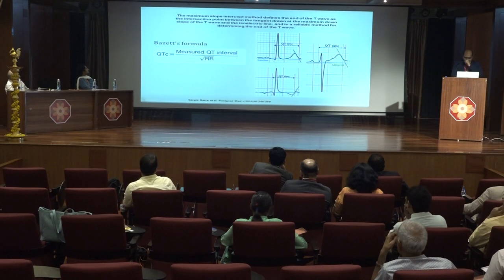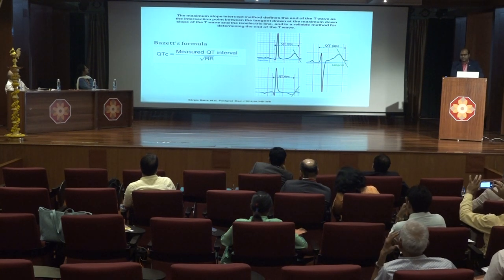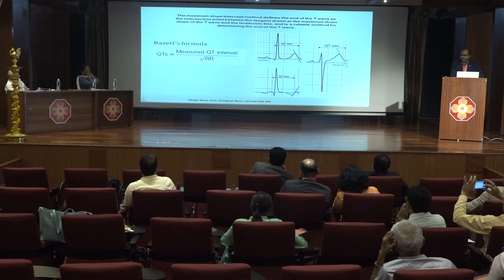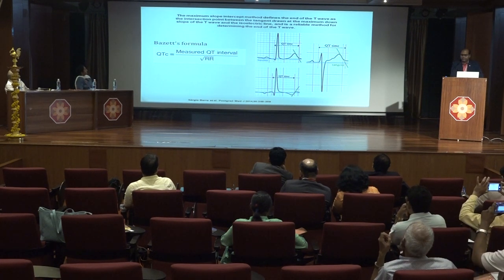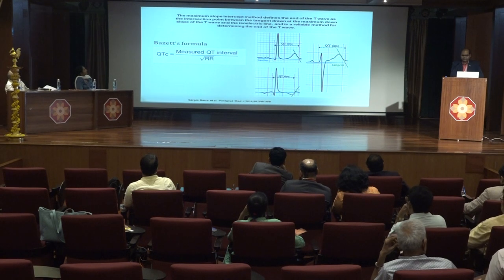It is important to measure the QT interval manually and not rely on computer-derived values. To measure the QT interval, draw a perpendicular line to the start of the Q wave. To find the end of the T wave, draw a tangential line to the end of the downslope of the T wave; where this meets the isoelectric line is the endpoint of the T wave. The corrected QT interval can then be obtained using Bazett's formula.